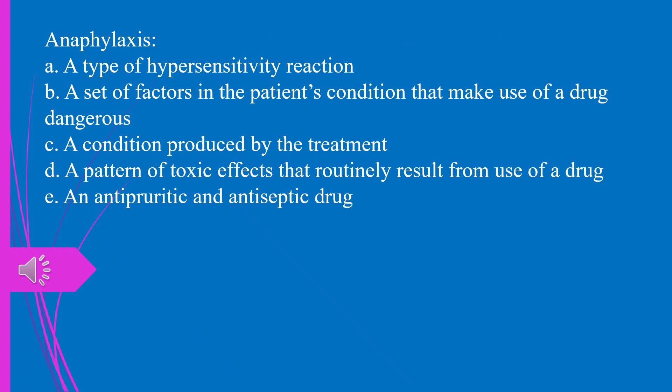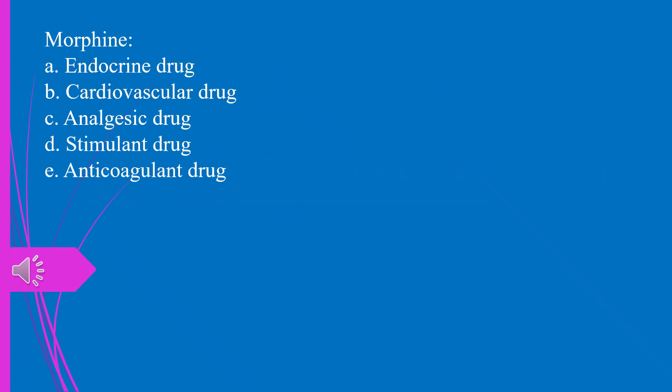Question 54. Anaphylaxis: a) a type of hypersensitivity reaction, b) a set of factors in the patient's condition that make use of a drug dangerous, c) a condition produced by the treatment, d) a pattern of toxic effects that routinely result from use of a drug, e) antipyretic and antiseptic drug. The answer is a, a type of hypersensitivity reaction.